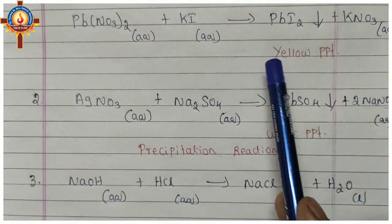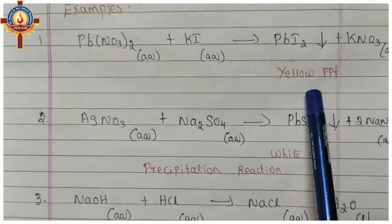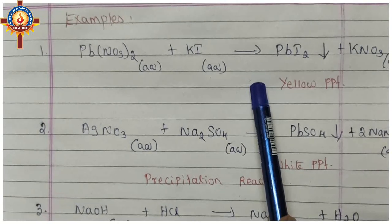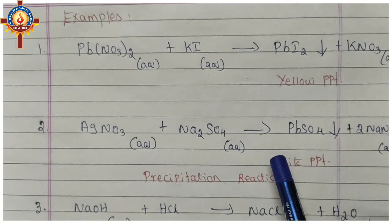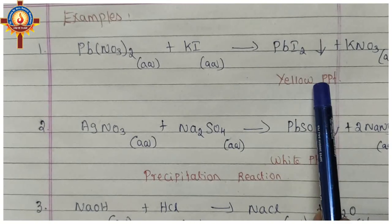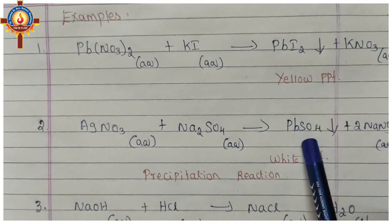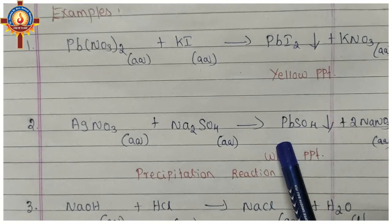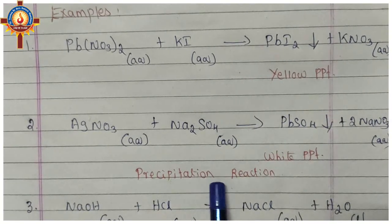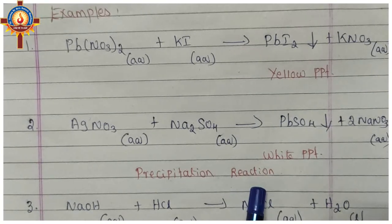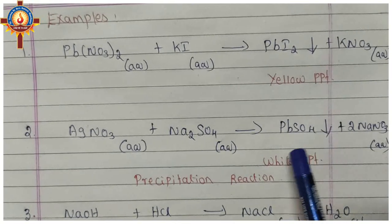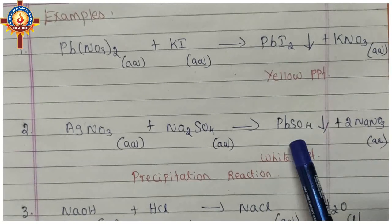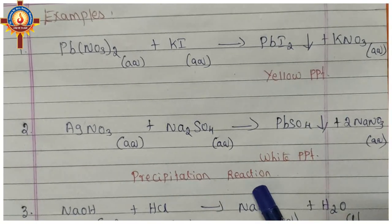Both these reactions come under double displacement reaction. Additionally, any reaction that produces a precipitate — an insoluble substance formed in a chemical reaction — can also be called a precipitation reaction. Both these examples can also be written as examples of precipitation reactions.